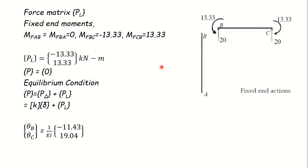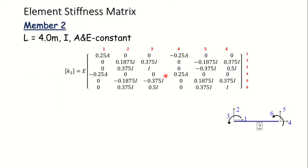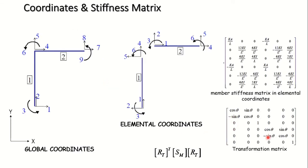To obtain the moments within the frame, substitute the values of theta_B and theta_C into the slope deflection equations to get member end moments. These can then be used to draw the bending moment diagram. The shear force diagram is obtained by calculating reactions at the member ends and considering the applied loads. For members inclined to the global x direction, remember to use the transformation relation K_global = R_T^transpose · S_M · R_T.